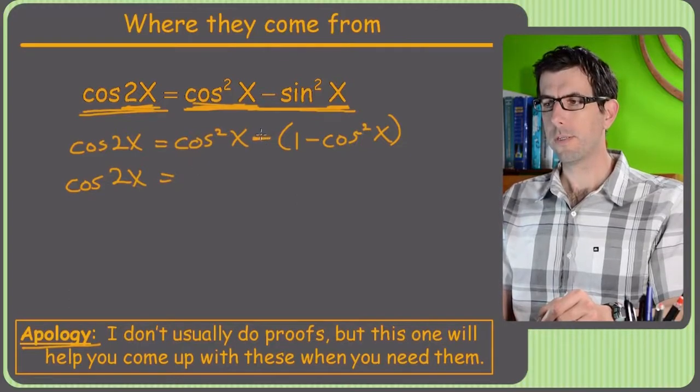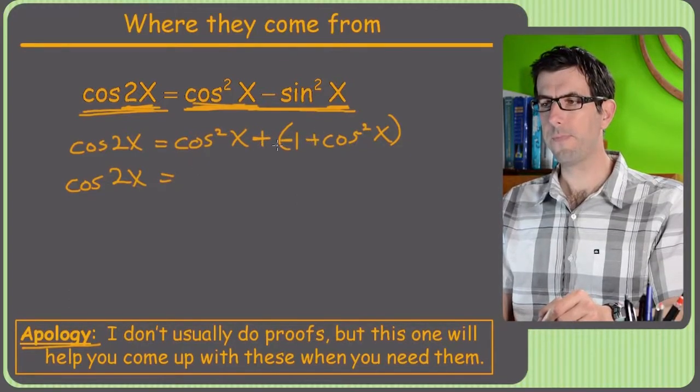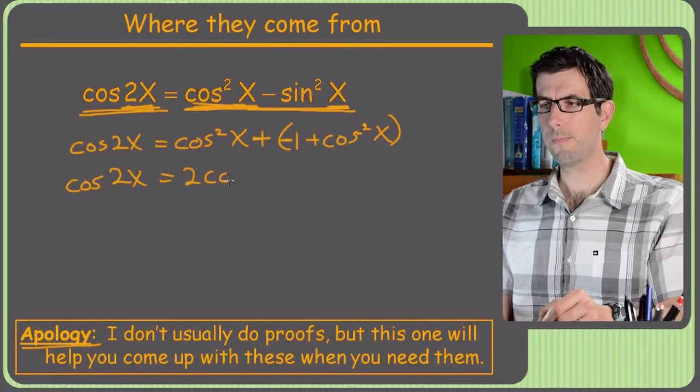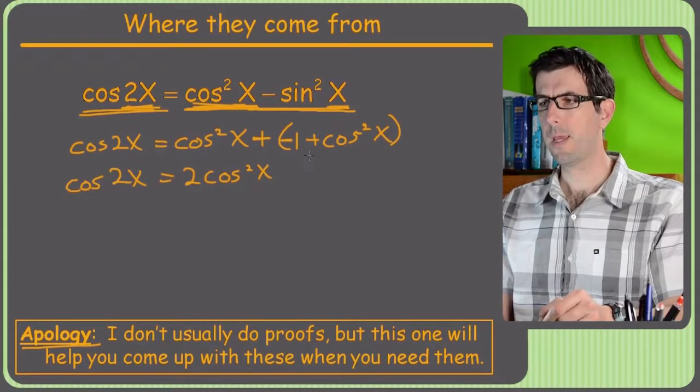All right, so at this point we just have cosine, so now we can just sort of simplify and combine like terms. So we'll get, distribute this negative sign in because that can be tricky. So now we've got 2 cosine squared and minus 1.